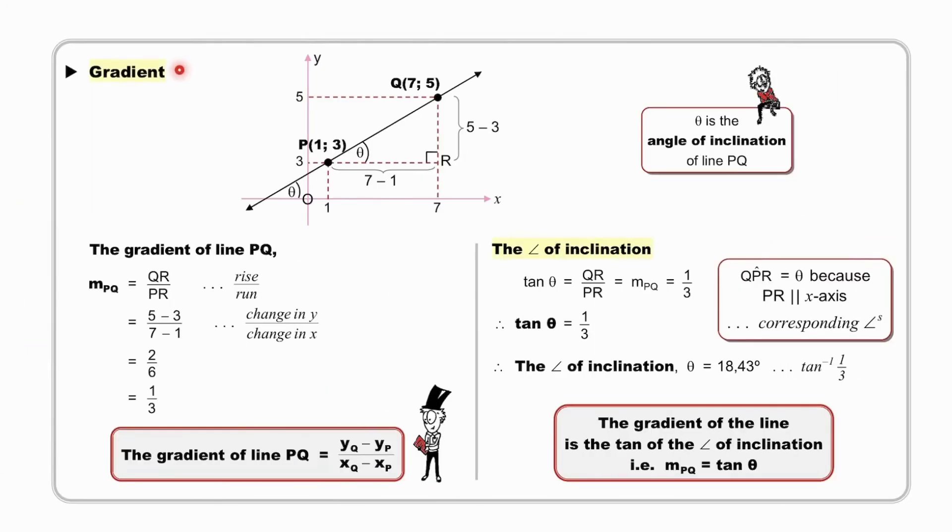Let's do the same with the gradient formula. Again, points P and Q. And as before, we will observe the length of PR and the length of QR. Note that θ is equal to the angle of inclination of line PQ. Pause while you determine the gradient of line PQ from this drawing. The gradient of PQ is QR over PR, (5 - 3) over (7 - 1), 2 over 6, and ultimately one-third. And this confirms the gradient of our line PQ, according to our formula, is (y_Q - y_P) over (x_Q - x_P).